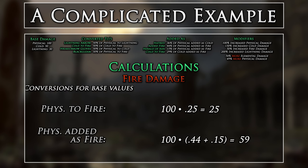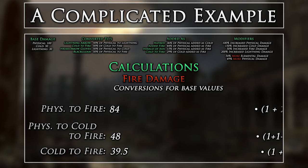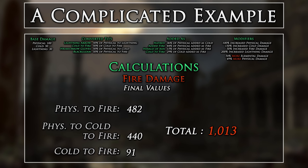Finally, we have fire, which is the most complicated. Here, we not only have added as conversions, but multiple different sourced Converted Tos. We will first want to complete our conversions to get our base numbers. As with cold, we will have a physical to fire and physical added as fire. Once we get these base numbers, we can add them together as they both source from the same damage type. Now due to the Cold to Fire gem, we can also take the information we gained from our cold conversions to get our values here. We are converting from physical to cold to fire, as well as from flat cold to fire. This will result in the following base numbers. These cannot be added together, as they both source from different damage types. We now have our final base numbers from conversions, so we can apply modifiers — adding increased modifiers together and multiplying by all more modifiers. All of our converted damages will benefit from damage types that they were and now are. Now that we have gotten our final numbers, we can calculate our total by adding them all together.